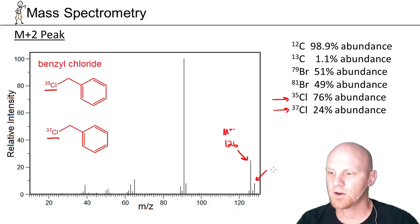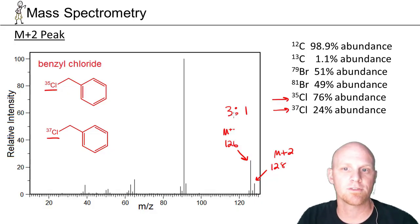But then we also see a peak here at 128. That's the M+2 peak. But notice these are not in a 1 to 1 ratio. Now they're in a 3 to 1 ratio. And that's the dead giveaway here, roughly 75 to 25% ratio. That 3 to 1 ratio is a dead giveaway you've got a chlorine in your molecule rather than a bromine.